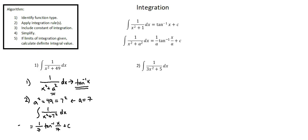We've completed step 3: include constant of integration. Step 4: there is no simplification. Step 5: there are no limits of integration. So we're done with Example 1. A comment regarding the root we're using for 49: we're using the value 7. 49 has another root which is negative 7, but in this process we only need to consider the positive root.